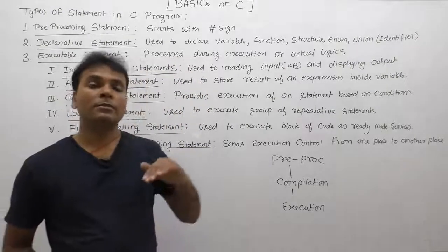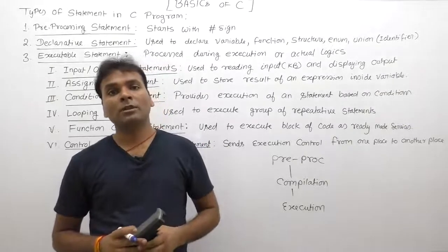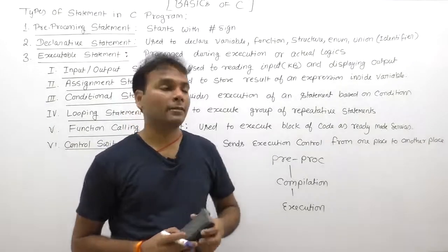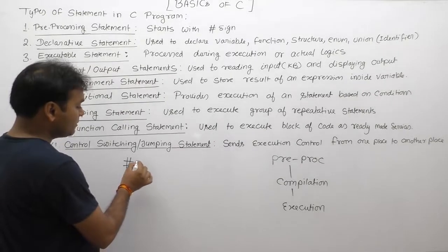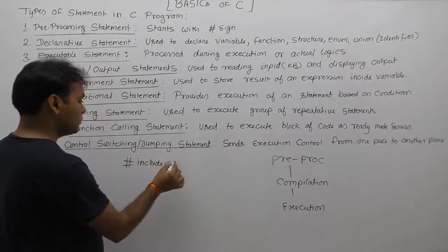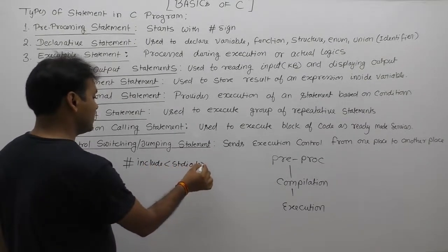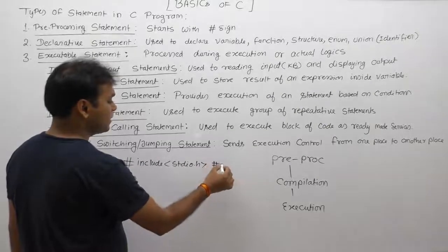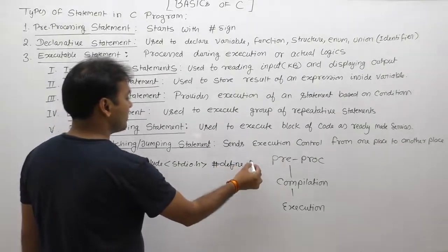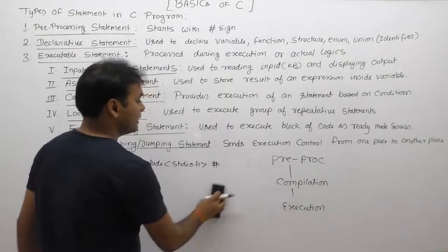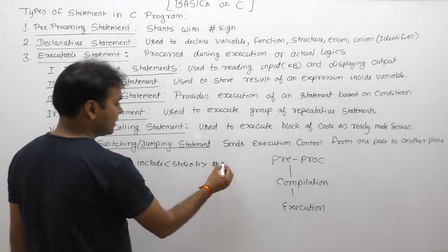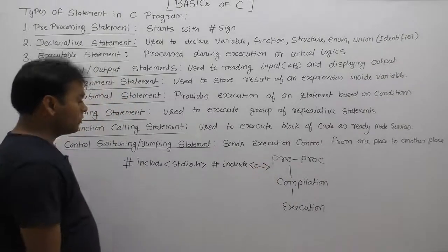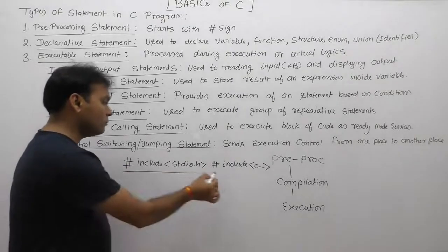Declarative and executable statements are terminated by semicolons, but pre-processing statements don't require a semicolon — they are separated simply by lines, with only a single pre-processing statement per line. For example, #include stdio.h, #include conio.h — each on its own line. It is not possible to write two pre-processing statements on the same line. For instance, #define PI 3.14 and another #include conio.h on the same line would be completely wrong.